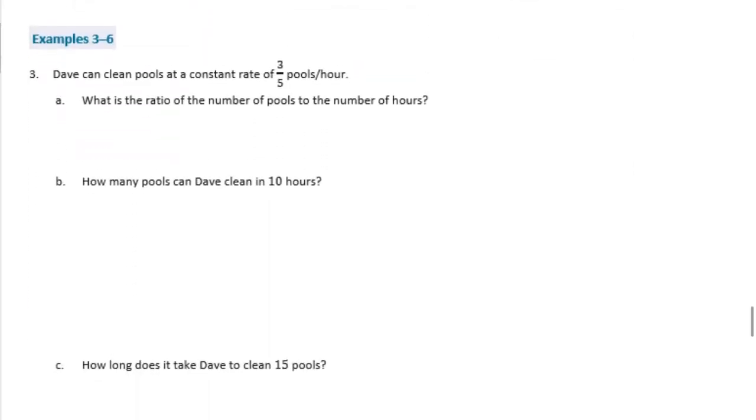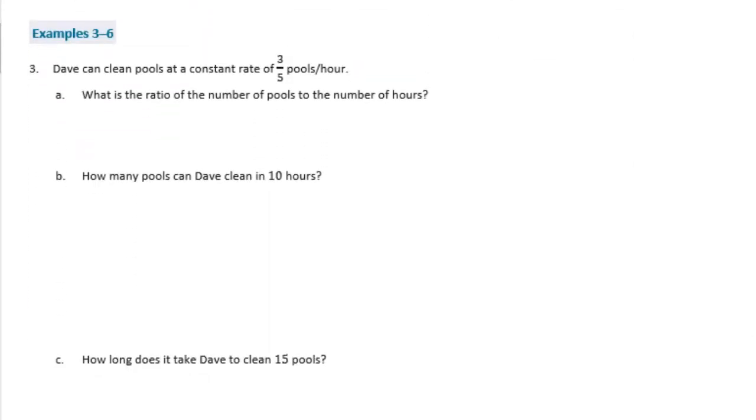Examples 3 through 6. Dave can clean pools at a constant rate of 3 fifths pools per hour. What is the ratio of the number of pools to the number of hours? So pools per hour would be 3 to 5 is the ratio.